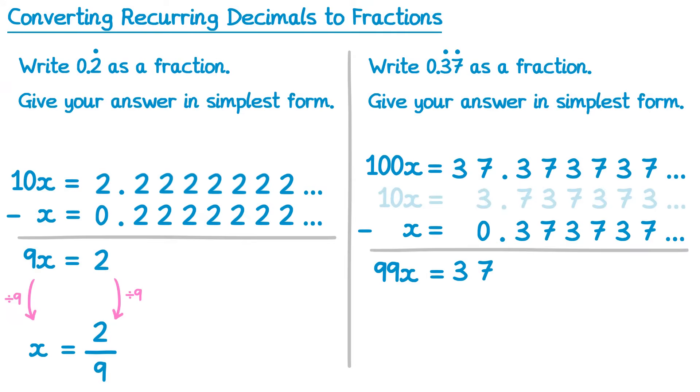We can solve this equation like we did the other one, divide both sides by 99. So 99x divide 99 is just x, and 37 divide 99 is 37 over 99. We should always check at the end of the question if we can simplify, but this one can't simplify, so it's the final answer.